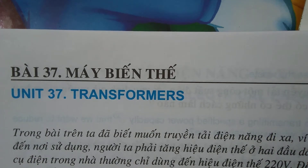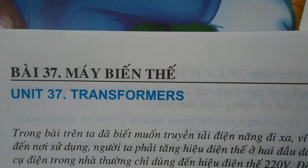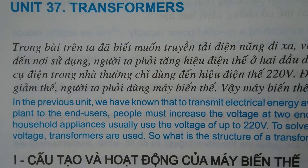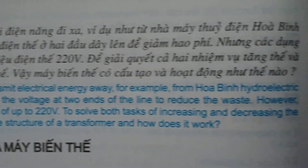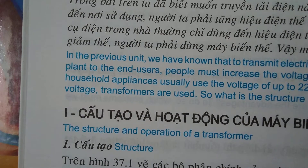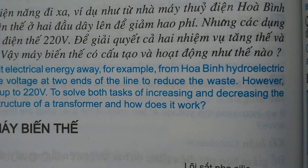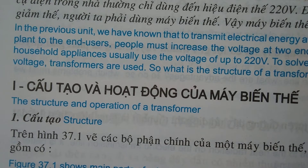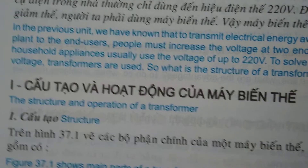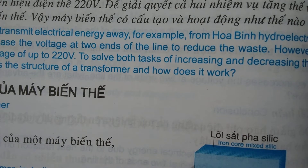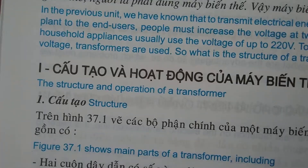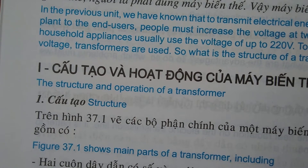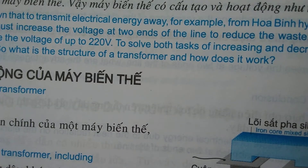Unit 37, page 100: Transformers. In the previous unit, we learned that to transmit electrical energy from a hydroelectric plant to end users, the voltage at two ends of the line must be increased to reduce waste. However, household appliances usually use a voltage of up to 220 volts. To solve both tasks of increasing and decreasing voltage, transformers are used. So what is the structure of a transformer and how does it work?